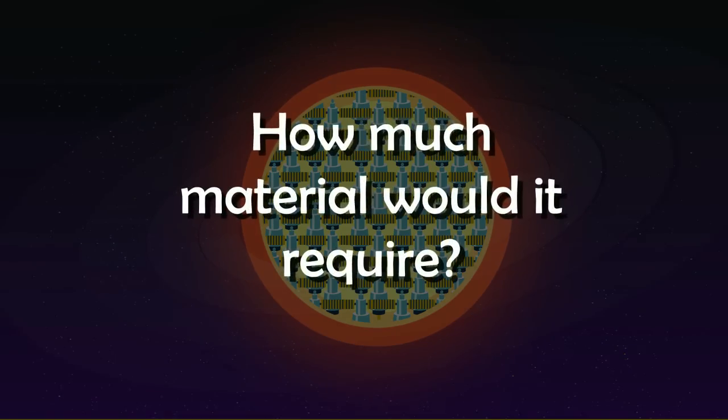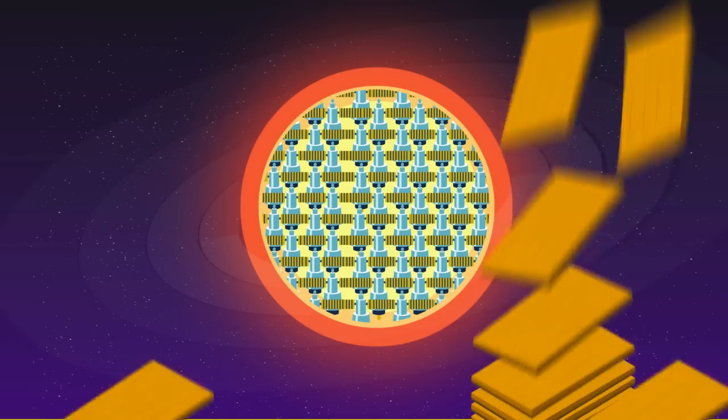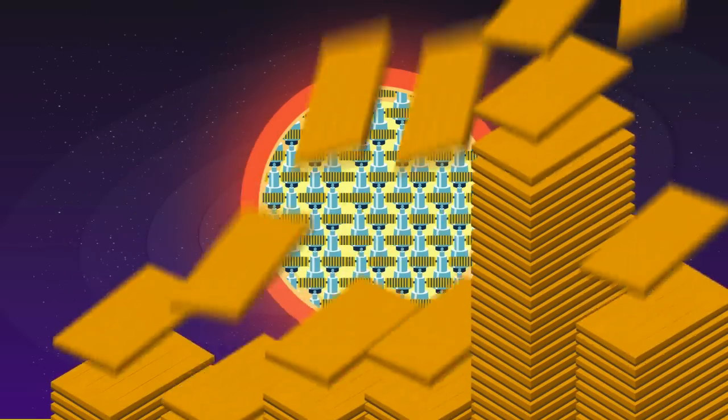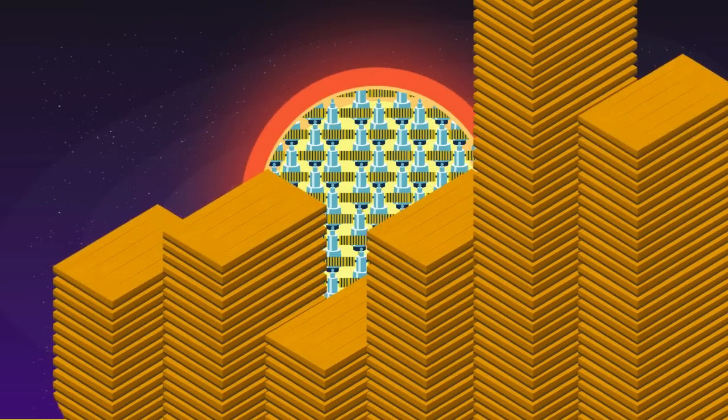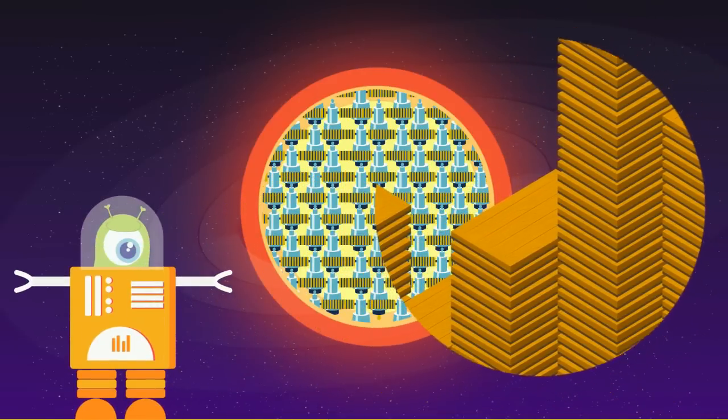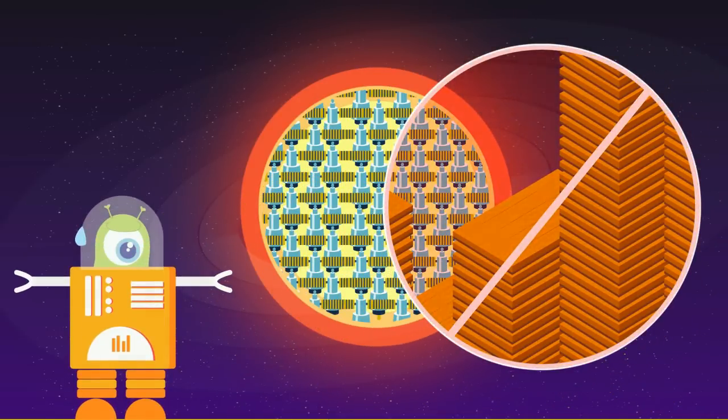But think about this: how much material would a Dyson Sphere require? To cover the sun, it would require a lot of resources which we should possibly collect from the rest of the solar system. Hence, the Dyson Sphere isn't practical. Even if we have the technology to build it, there isn't enough material available.